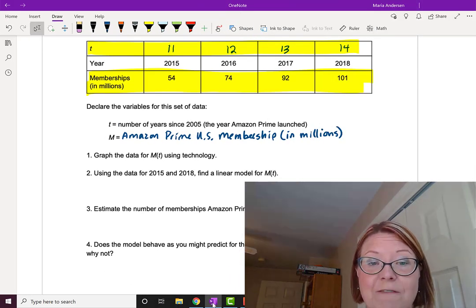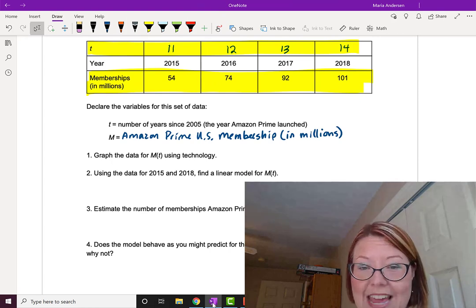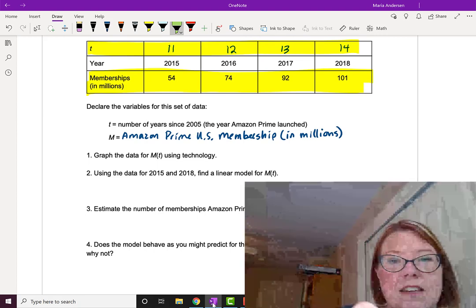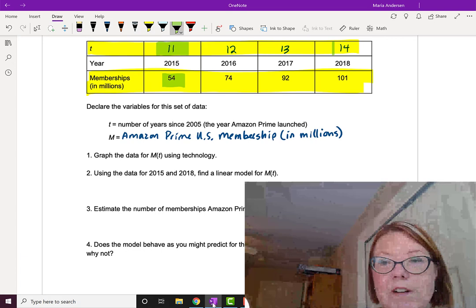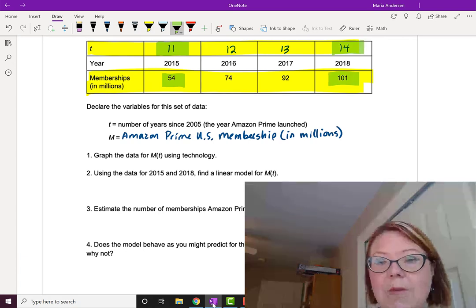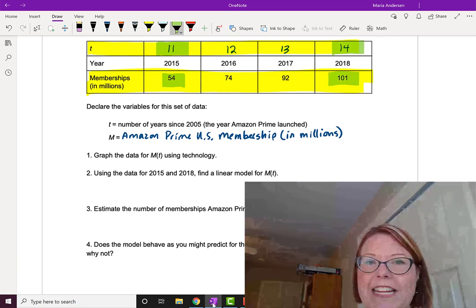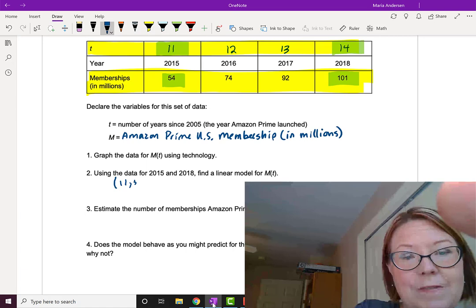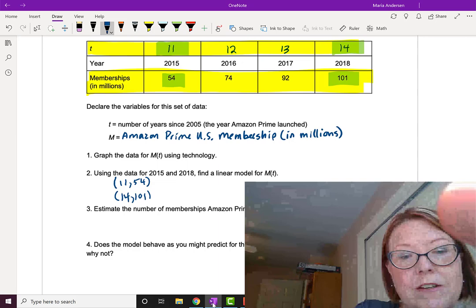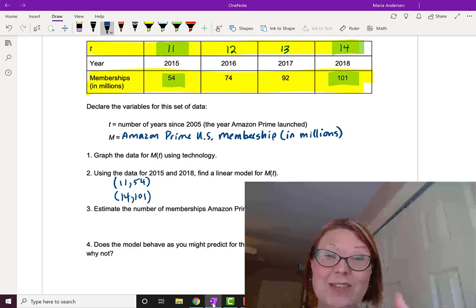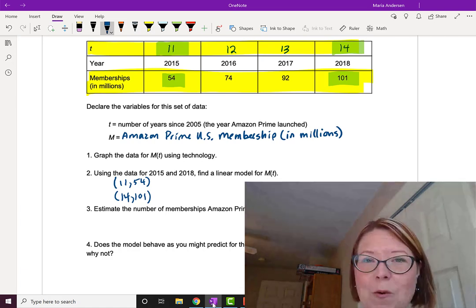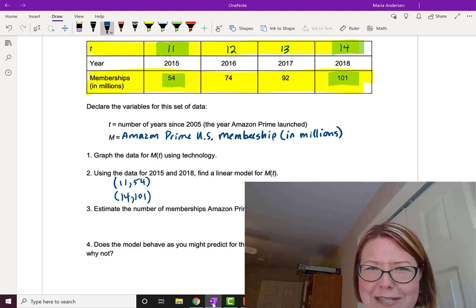Now we're going to use the data for 2015 and 2018 to find a linear model for M of T. Let me highlight that data. That's time 11 and M 54 and time 14 with M 101. Let's first write down those data values as two points. The point 11, 54 and the point 14, 101. I've written them vertical to each other so that it's easy to do the subtraction.